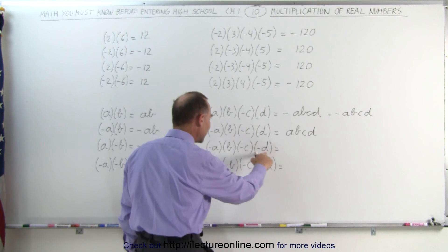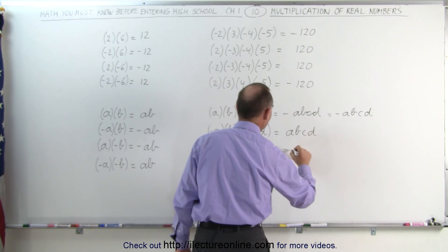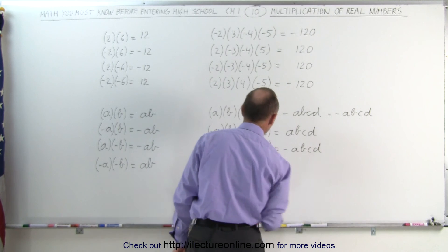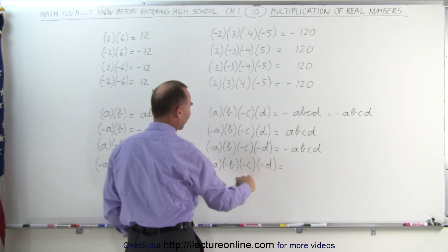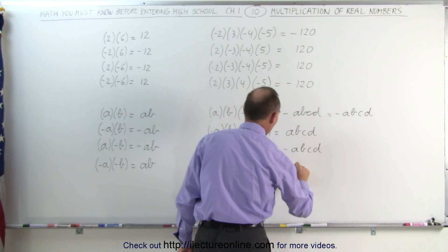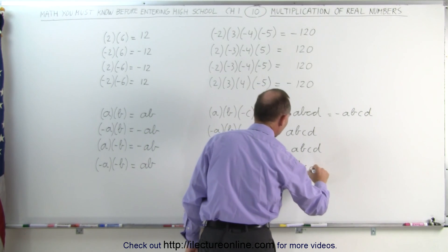Here, notice that there's three negative signs. That makes this negative again, negative abcd. And finally, four negatives, just like we did over here. There's four negatives. That's an even number of negatives. That gives you a positive answer, abcd.